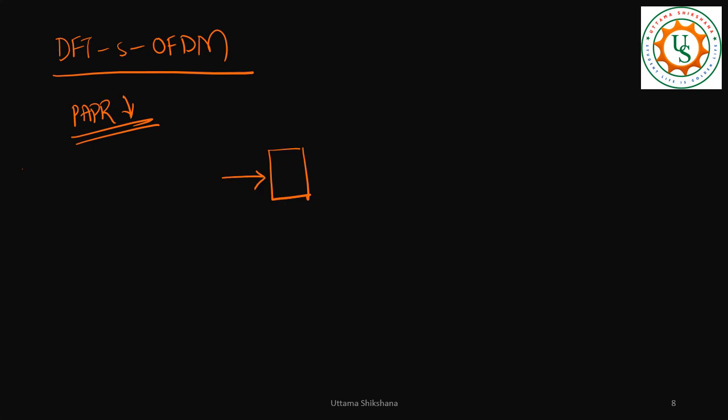Normally we had taken all zeros, right? So this is a modulation DFT block. It will be like M-point DFT. Then for OFDM we have N-point IFFT block, right?